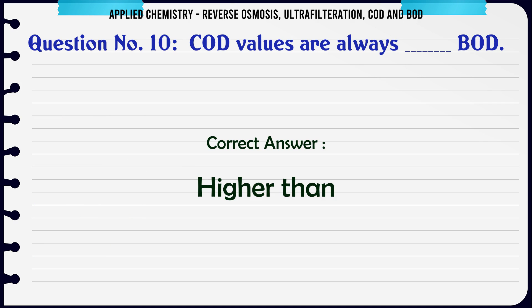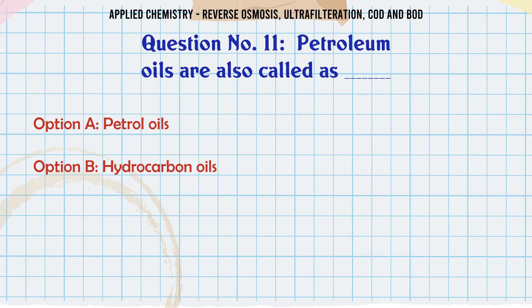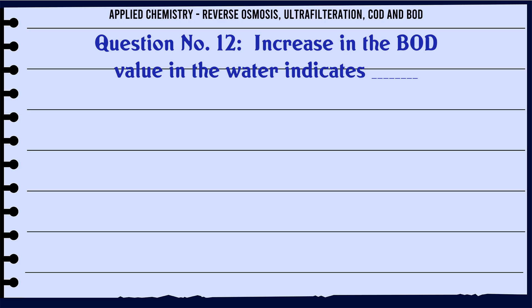COD values are always: a) less than, b) higher than, c) equal, d) nearly equal. The correct answer is higher than. Petroleum oils are also called as: a) petrol oils, b) hydrocarbon oils, c) fatty oils, d) well oil. The correct answer is hydrocarbon oils.